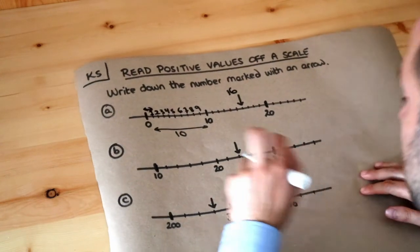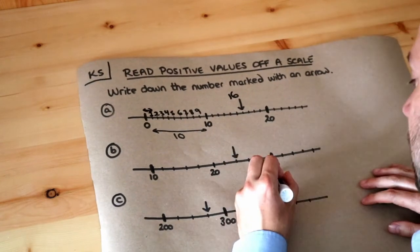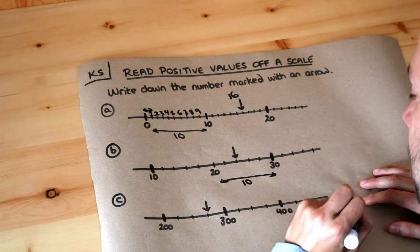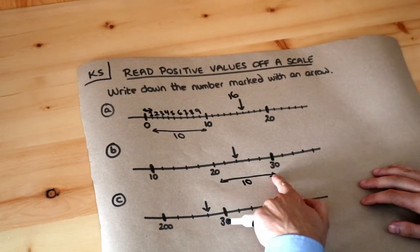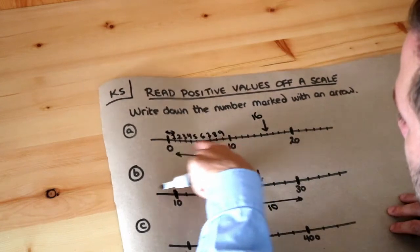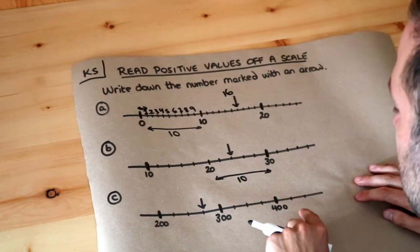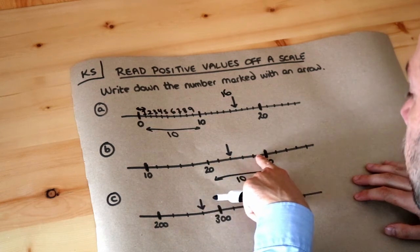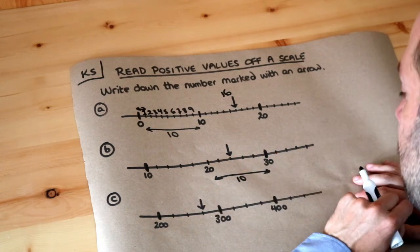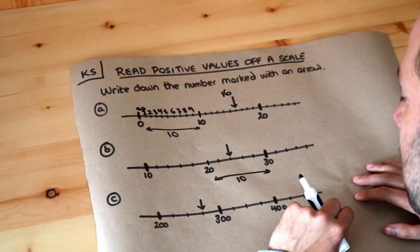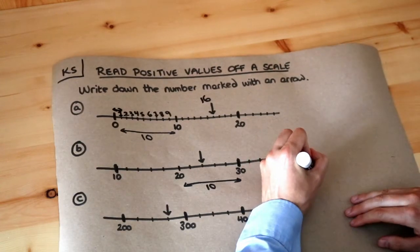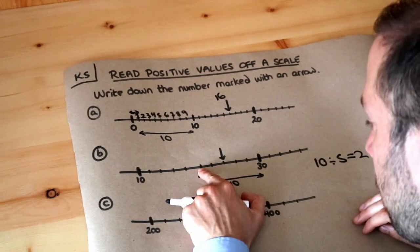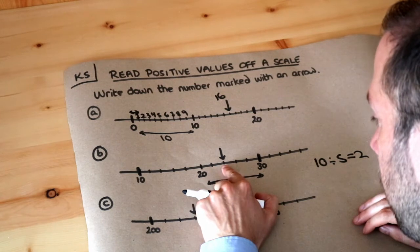Let's do a similar thing here — it's slightly harder. From 20 to 30 that's a difference of 10. But this time the 10 is not split into 10 regions as before; it's actually split into 1, 2, 3, 4, 5 regions. So 10 divided by 5 is equal to 2, meaning each time we go up one mark we must be going up by 2.